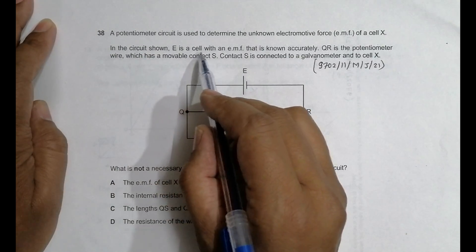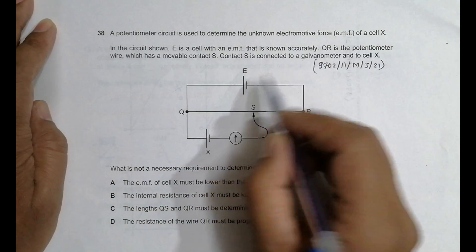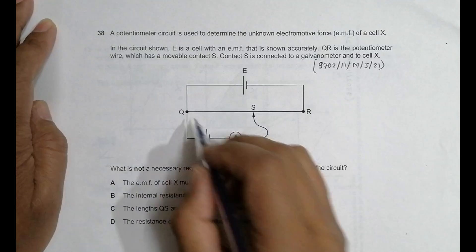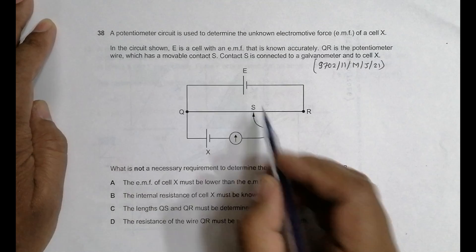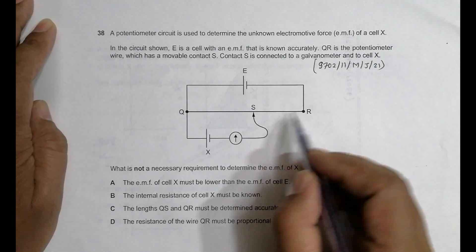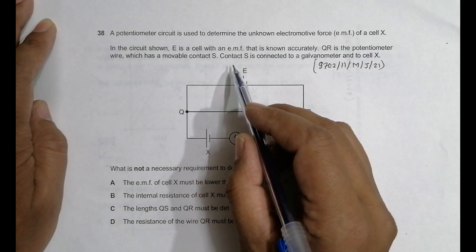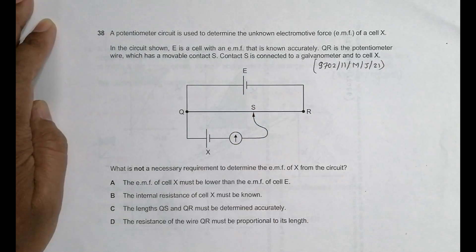In the circuit shown, E is a cell with an EMF that is known accurately. Of course, QR is the potentiometer wire, which is of uniform diameter, a smooth wire which has a movable contact here. So this contact can be slid here and there very smoothly. Contact S is connected to a galvanometer and then to cell X.